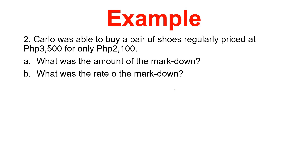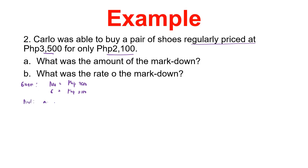Next problem: Carlo was able to buy a pair of shoes regularly priced at 3,500 pesos for only 2,100 pesos. The regular price of 3,500 is your cost price, and 2,100 is your selling price. We are looking for: (a) the markdown — how much was the price reduced — and (b) the rate of the markdown.